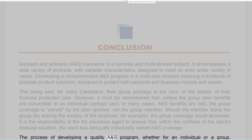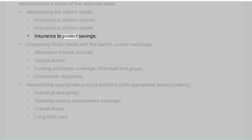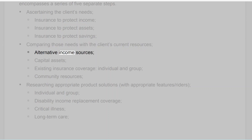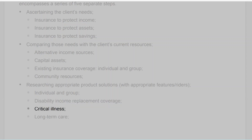The process of developing a quality ANS program, whether for an individual or a group, encompasses a series of five separate steps. Step one: Ascertaining the Client's Needs — insurance to protect income, insurance to protect assets, insurance to protect savings. Step two: Comparing those needs with the client's current resources — alternative income sources, capital assets, existing insurance coverage both individual and group, and community resources. Step three: Researching appropriate product solutions with appropriate features and writers — individual and group disability income replacement coverage, critical illness, long-term care.